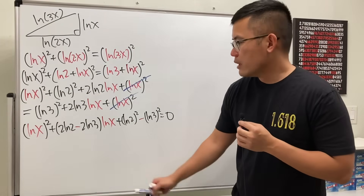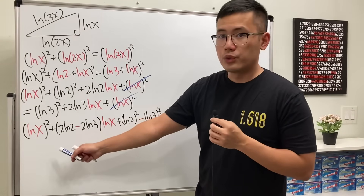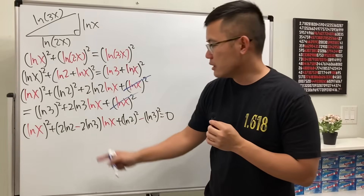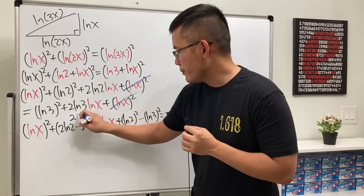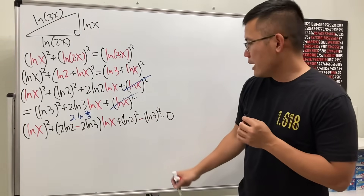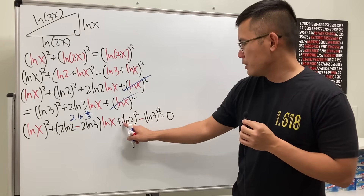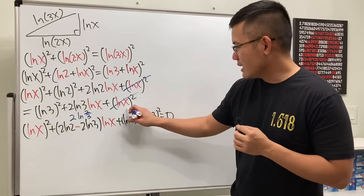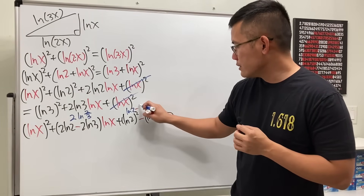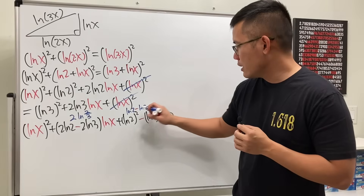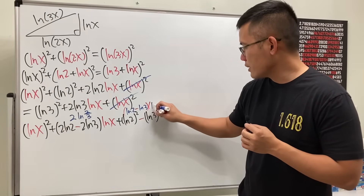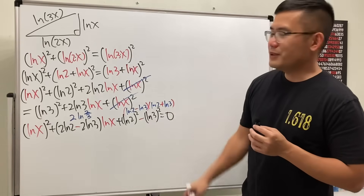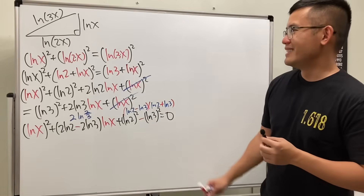We can simplify before continuing. In the linear term, factor out 2 to get 2(ln(2) − ln(3)), which by the log quotient property is 2·ln(2/3). The constant term, ln²(2) − ln²(3), is a difference of two squares, so it factors as (ln(2) − ln(3))·(ln(2) + ln(3)). We're using a lot of algebra tools here!